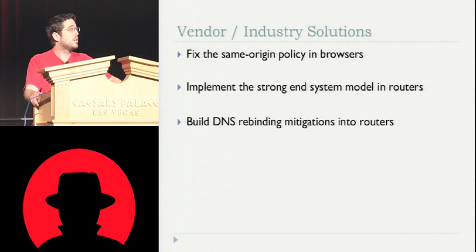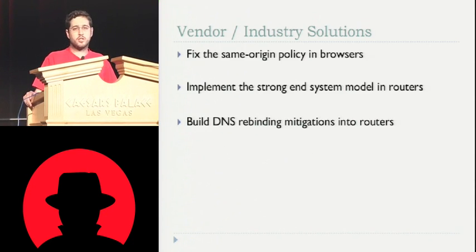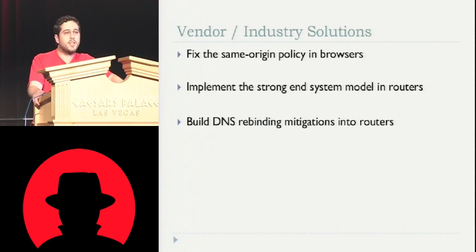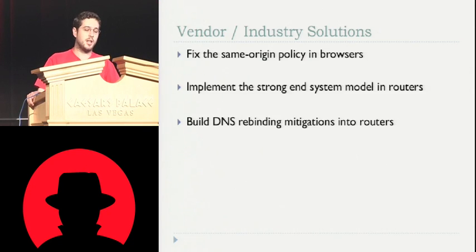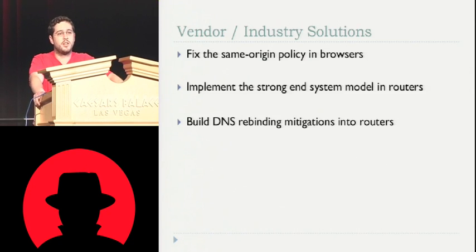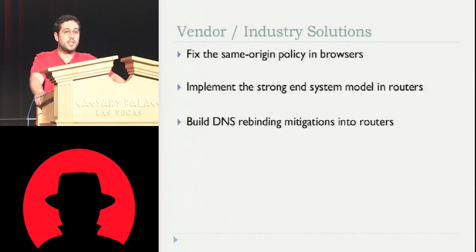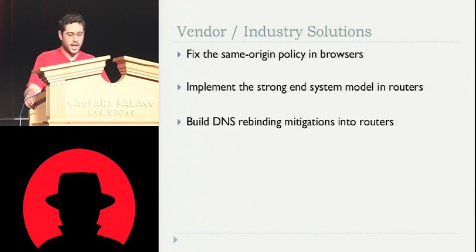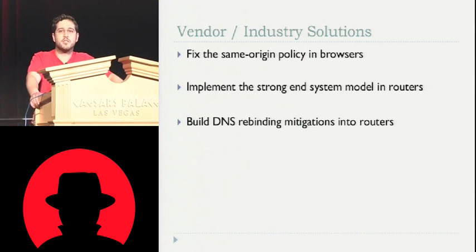If you're a router vendor, implement the strong end system model in your router. End users will not know or care, it will not break anything for them, and it will keep them secure from this particular attack. You can also build DNS rebinding mitigations into routers — the only router I know of that does this is PFSense. They contacted me and said just check your HTTP host headers: make sure the HTTP host header has your hostname or IP address and not someone else's. Their beta release for PFSense 2.0 has that check in it — kudos to them. And that's a very simple way to stop any DNS rebinding attack in its tracks.